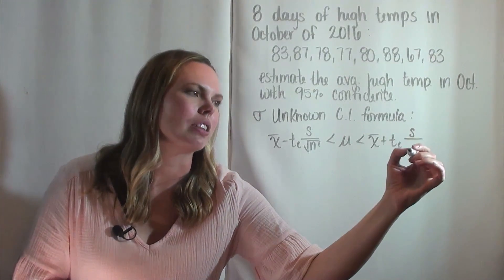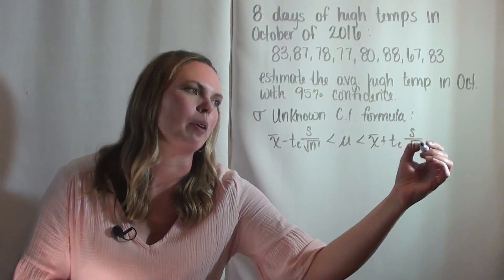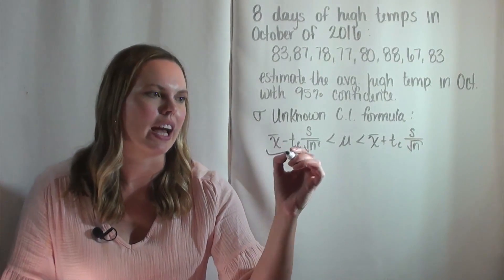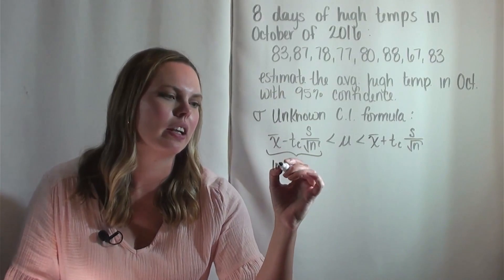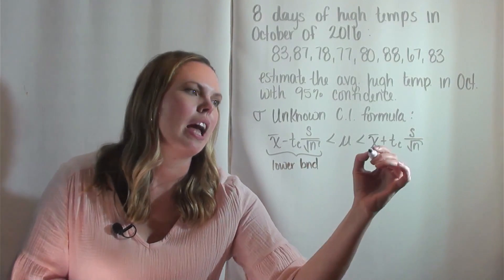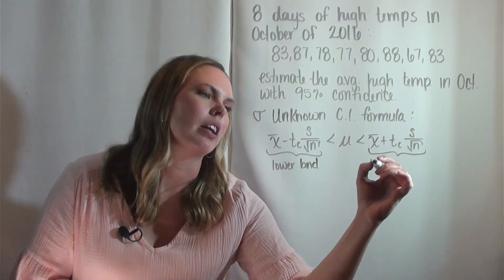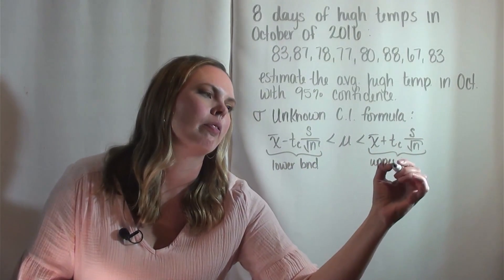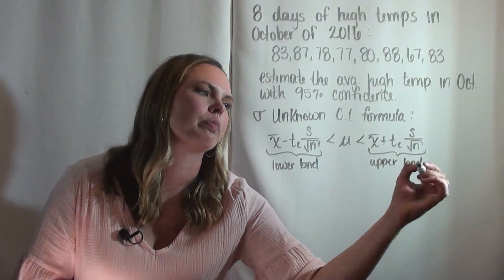You can also see it asking for the lower and upper boundaries on mu. So if you're doing that, this is the lower boundary, and this is the upper boundary.